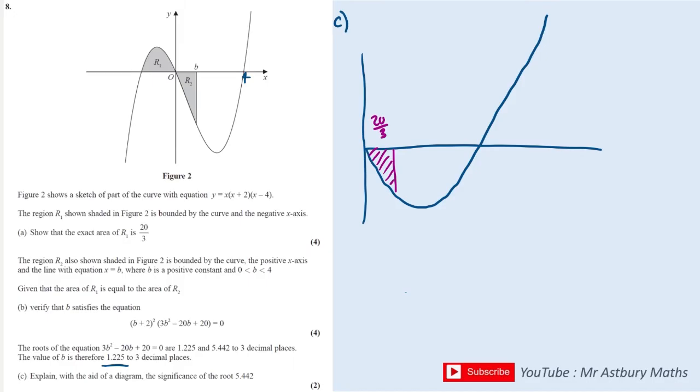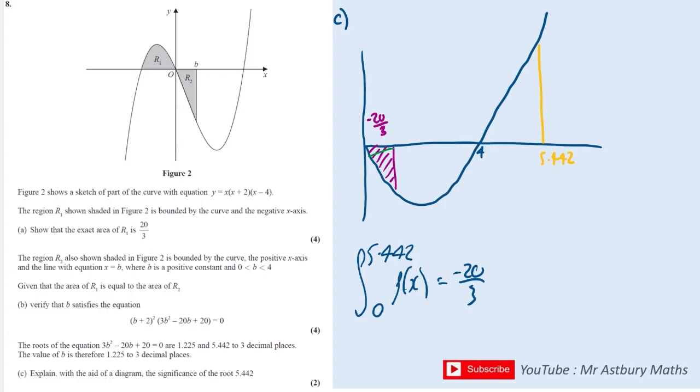And then we need to find another root where all of the area is going to give me negative 20 over 3. We're told that it's here at about 5.442, and we know that this is 4. So if I were to integrate between 5.442 and 0 the function, I would get minus 20 over 3. Let's call this area here, the green area, R3. That's below the axis. And let's call this area here R4. That's above the axis.